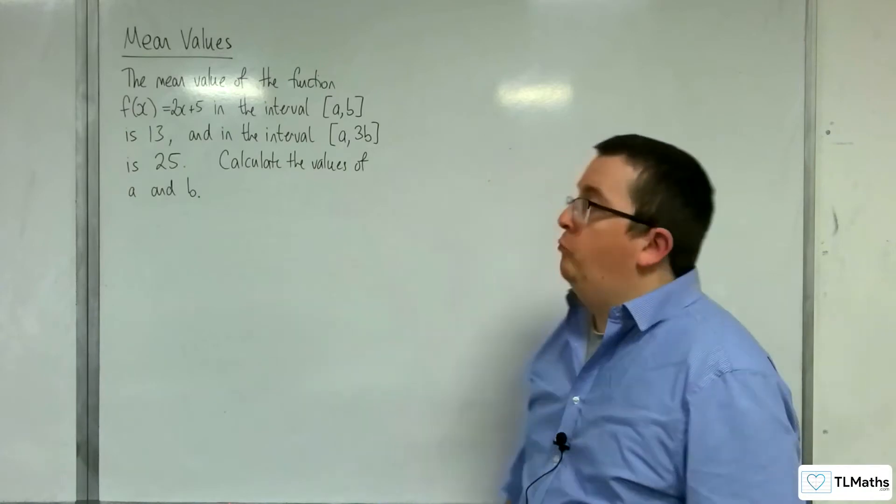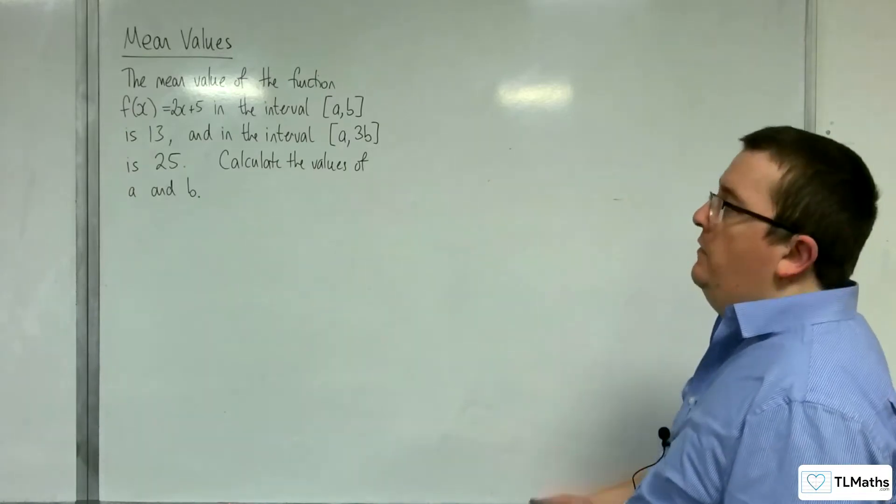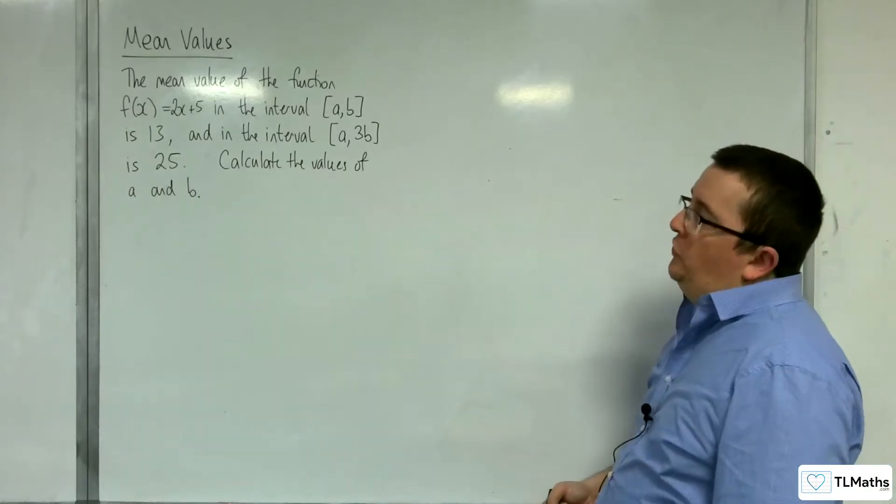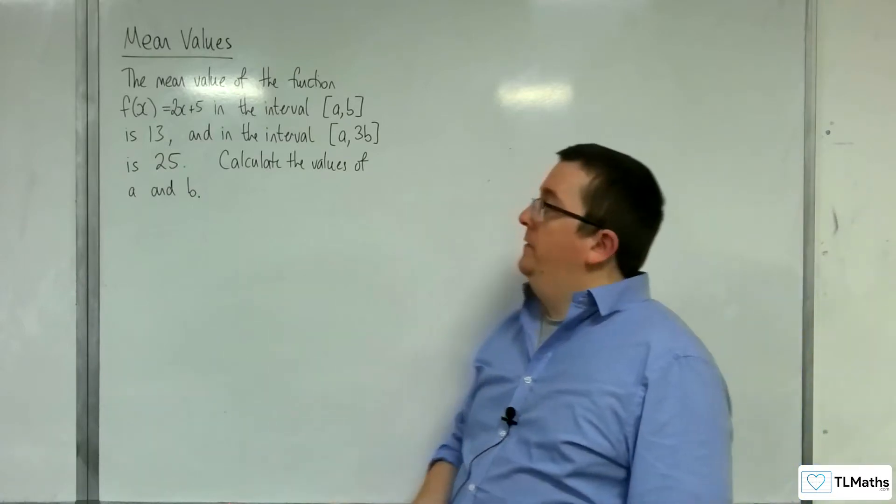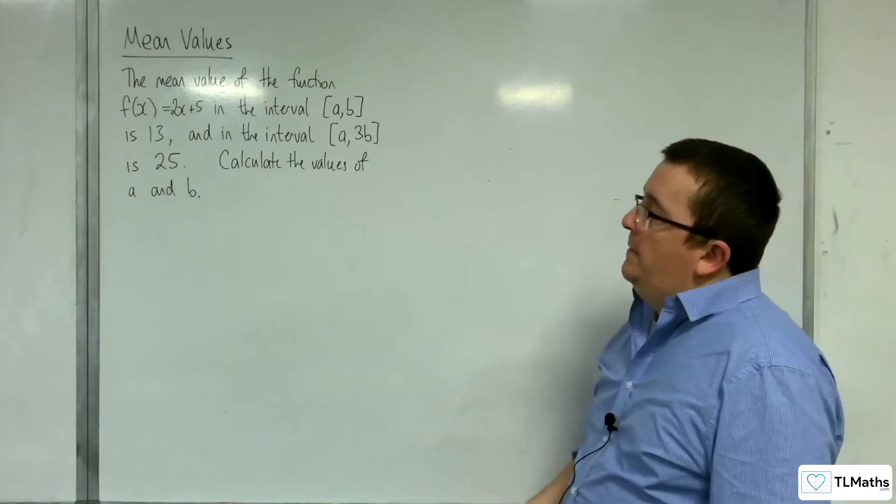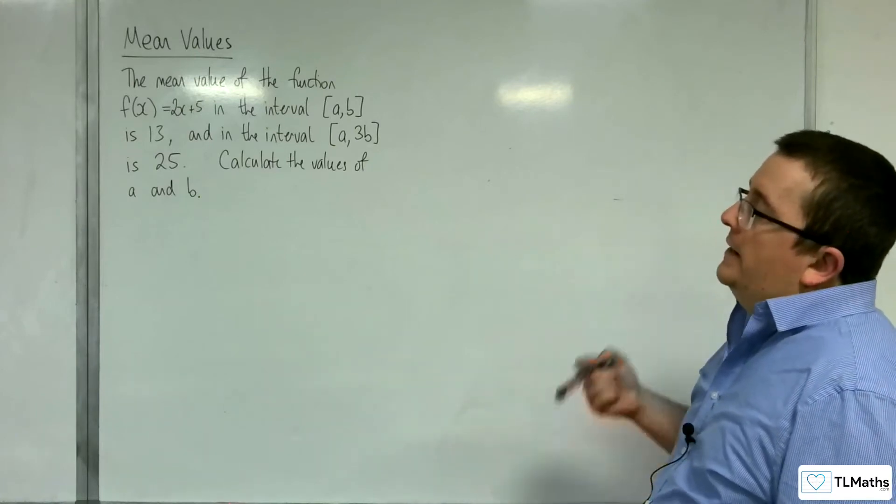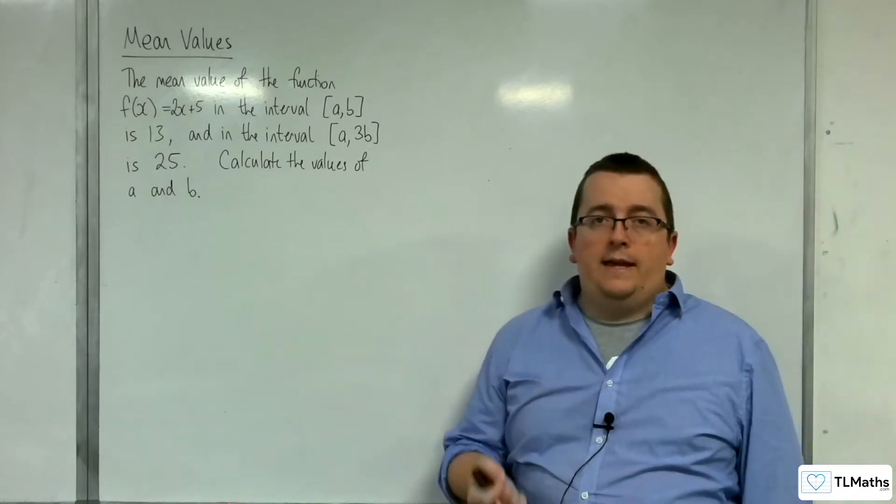In this video, we're going to be looking at this problem where we have the mean value of the function f(x) = 2x + 5 in the interval [a,b] is 13, and in the interval [a,3b] is 25. Calculate the values of a and b.